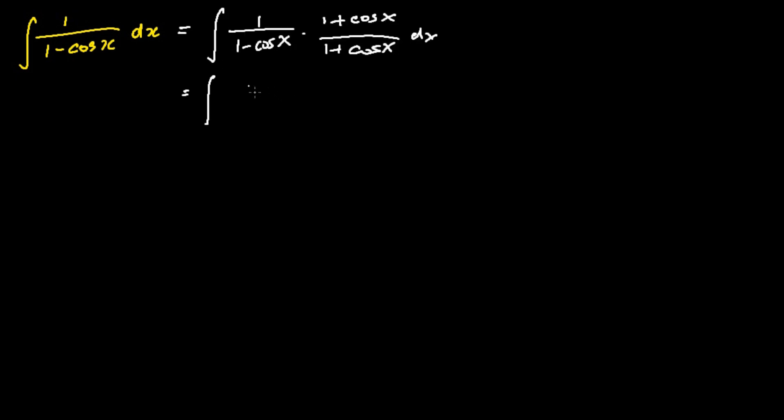In the numerator, there will be 1 plus cosine x. Whereas in the denominator, the multiplication of 1 minus cosine x and 1 plus cosine x is just 1 minus cosine square x dx.